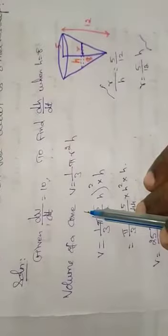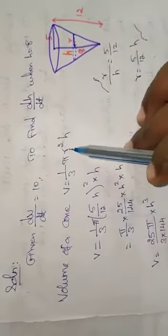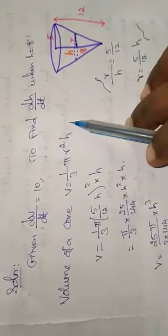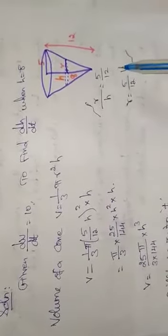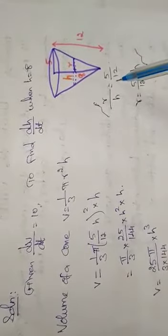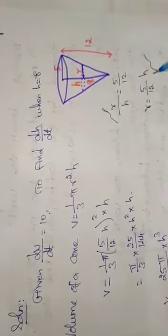The volume of a cone, we already know the volume of the cone: V is equal to 1/3 π r² h. Now we use the formula. Here r/h is equal to 5/12, so r is equal to 5/12 into h.